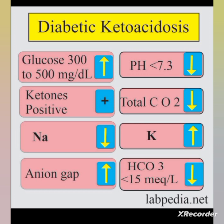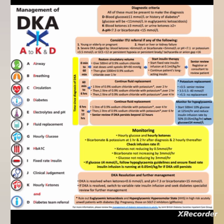Important clinical features to remember: polydipsia, polyuria, fruity breath, Kussmaul's respiration, altered mental status, nausea, and vomiting. Management priorities: check airway, breathing, circulation; monitor glucose, electrolytes, and pH hourly; fluid replacement is the best initial management; monitor HbA1c for glucose control; give a fixed rate of insulin and do not decrease glucose level too rapidly to avoid complications.